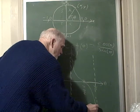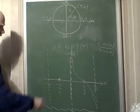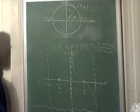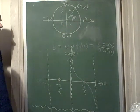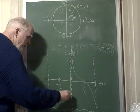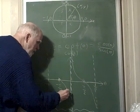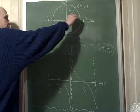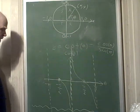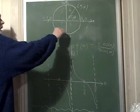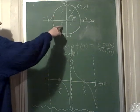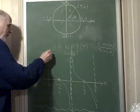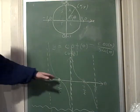Between zero and negative pi over 2, only the cosine is positive — not the tangent or cotangent — so it has to be negative going down. Between negative pi over 2 and negative pi, the tangent is positive so the cotangent is positive too, and it goes upward, producing these branches.